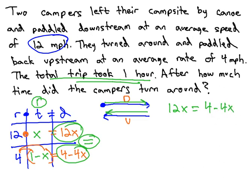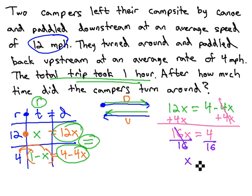We can now solve this two-step equation by moving the variable to the same side, getting rid of 4 negative x's with 4 positive x's, giving us 16x equals 4, and finally dividing both sides by 16 to get x is equal to 1 fourth. The amount of time they traveled downstream was a quarter hour, or 15 minutes.